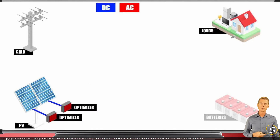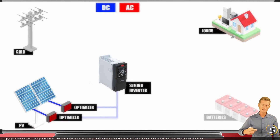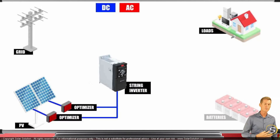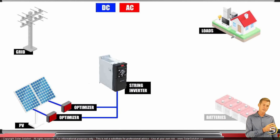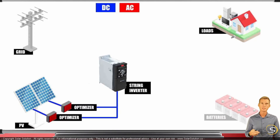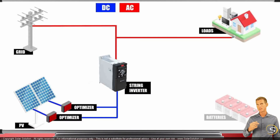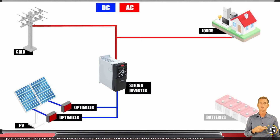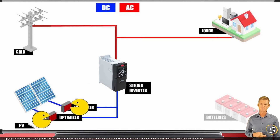From the optimizer you go to a string inverter. The string inverter takes a whole string — a whole group of solar panels — that all produce DC power which has already been optimized. The DC power goes to the string inverter, which inverts it into AC power and feeds it to the grid or the loads depending on your system setup. Nowadays the optimizers are normally no longer separate units but are already incorporated into the string inverter.